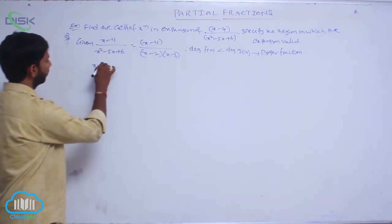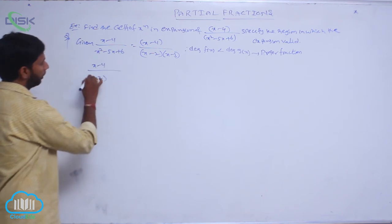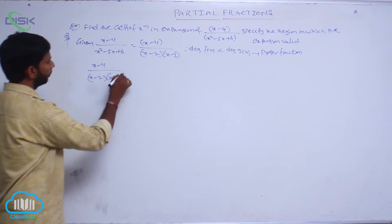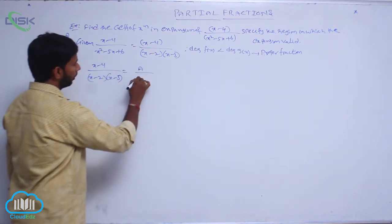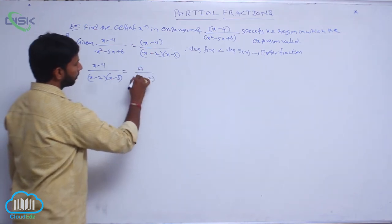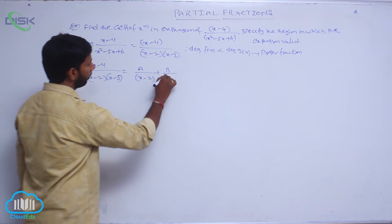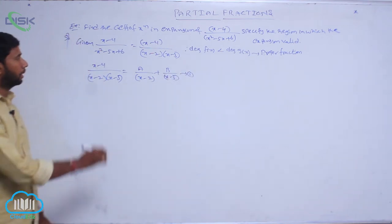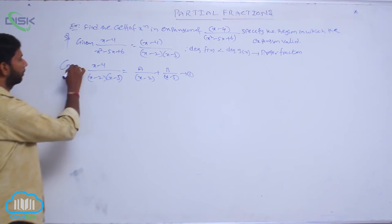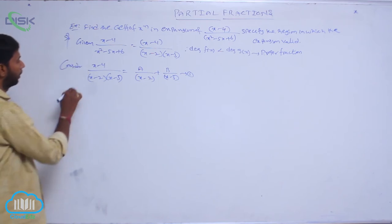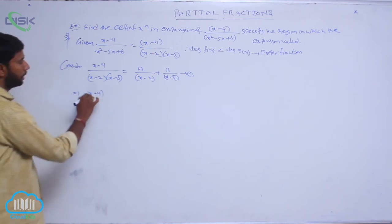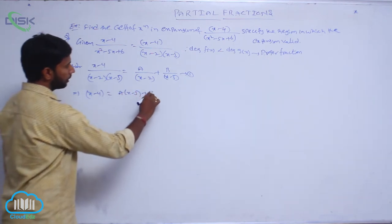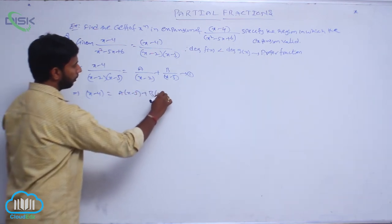Consider (x minus 4) by (x minus 2)(x minus 3) equal to A by (x minus 2) plus B by (x minus 3). Consider this as condition number 1. Taking LCM on both sides: x minus 4 equals A(x minus 3) plus B(x minus 2).